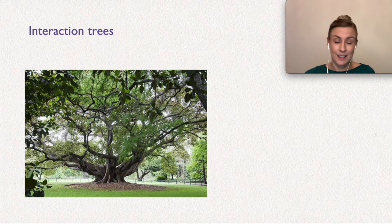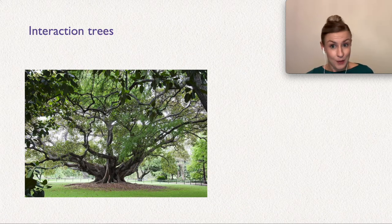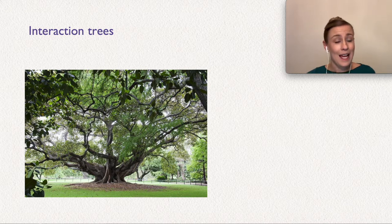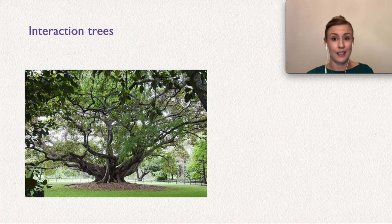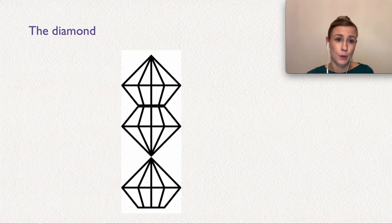Often we design interaction trees, where you start with one question and then get to make a choice of, say, three answers. It branches out, and then you get a new one, and a new one, and so on. If we look at the tree in the picture, it quickly branches out and becomes pretty huge. That means it's a lot of work for the designer, and the player or reader only gets to experience very little of it.